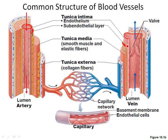Then you have the tunica media, the middle layer. It's composed of smooth muscle and elastic fibers. You need the smooth muscle because you have a lot of vasoconstriction and vasodilation going on, and that smooth muscle is what controls that. This is really important in the arterial system, not so much in the venous system. So in the venous system you'll have a thinner, smaller tunica media, while in the arterial system it will be much larger. Depending on the type of vessel, there's great variety in how much muscle versus elastin tissue is present.